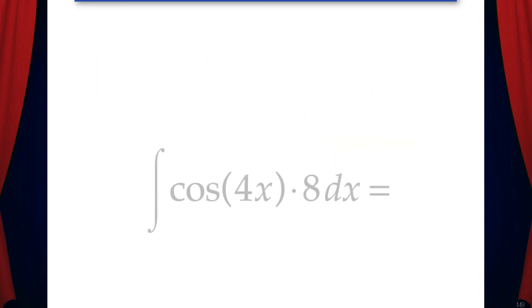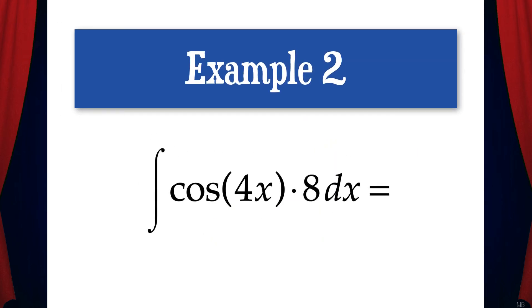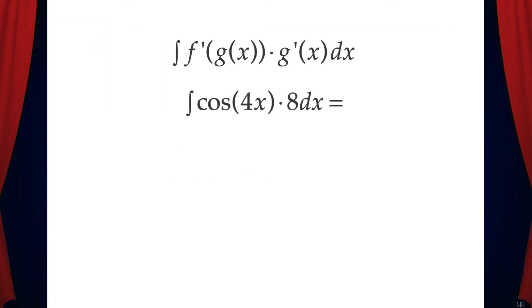Okay let's look at another example. Suppose we want to find the integral of cosine 4x times 8 dx. Again, we need to get this into the form of f prime of g of x times g prime of x dx.